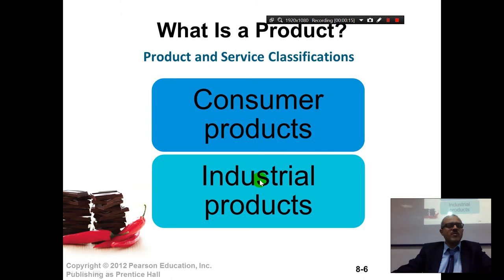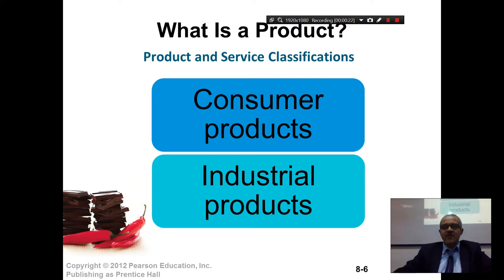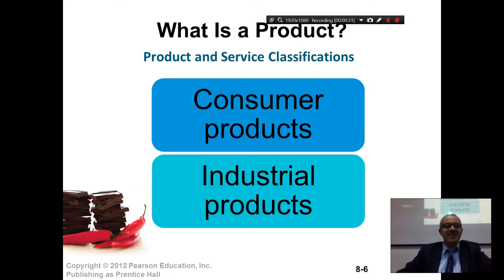An industrial product is a product used mainly for another process. So maybe if I am a hotel and I buy a shampoo, the hotel will use the shampoo to repackage for the rooms — that would not be a consumer product. Rather, they will buy it for an industrial use, repackage it, and use it for their own industrial purposes.